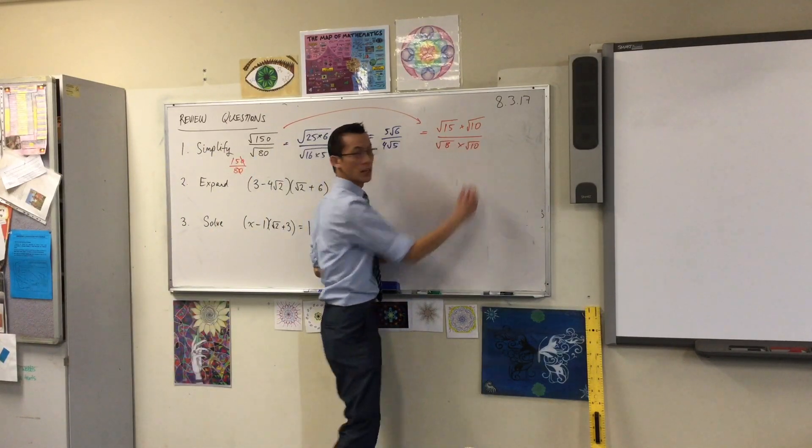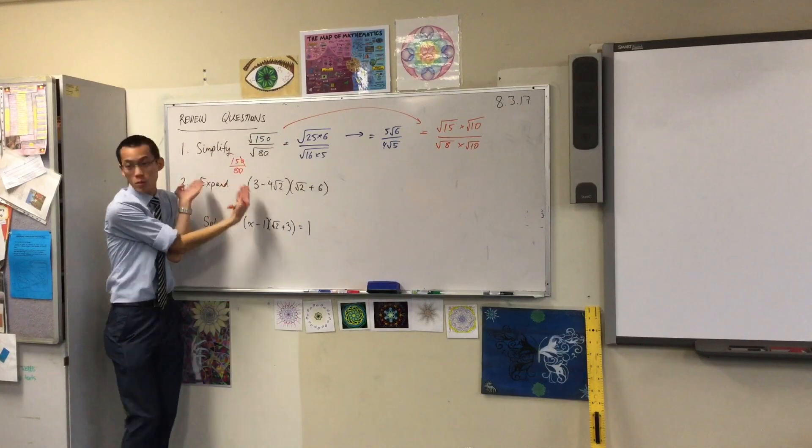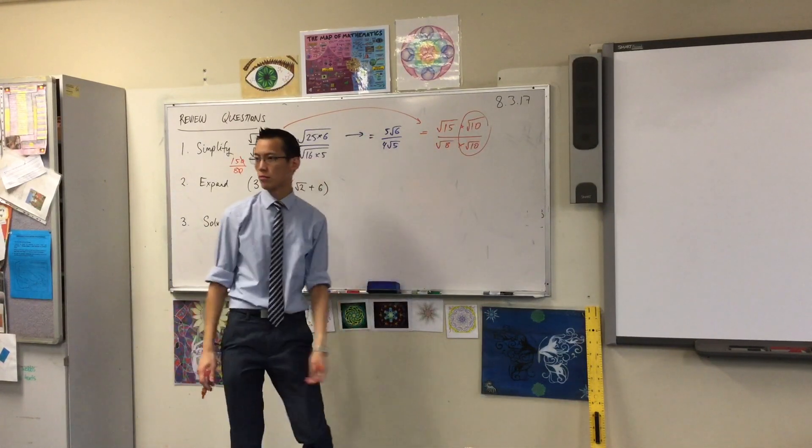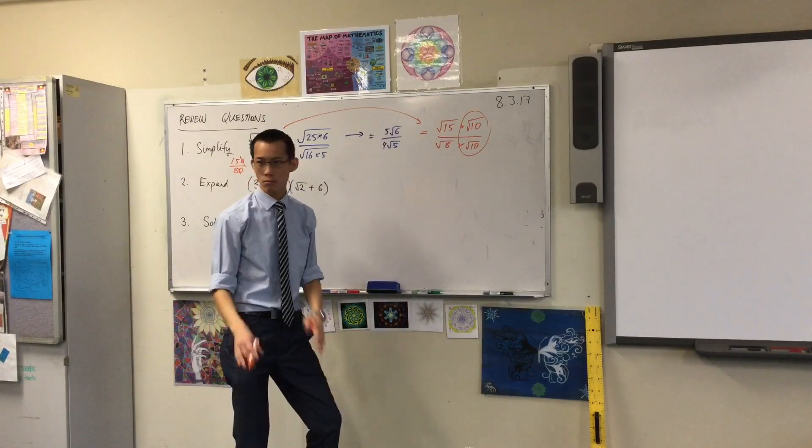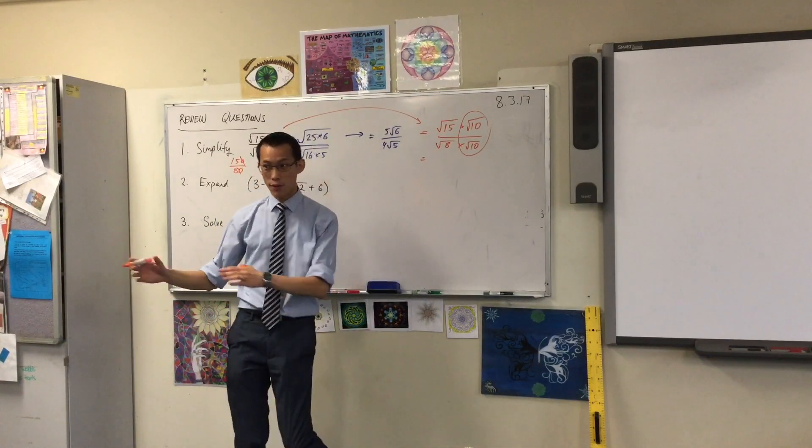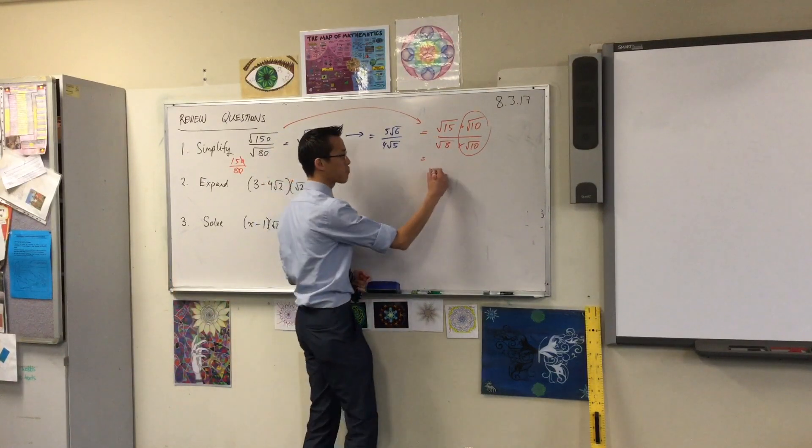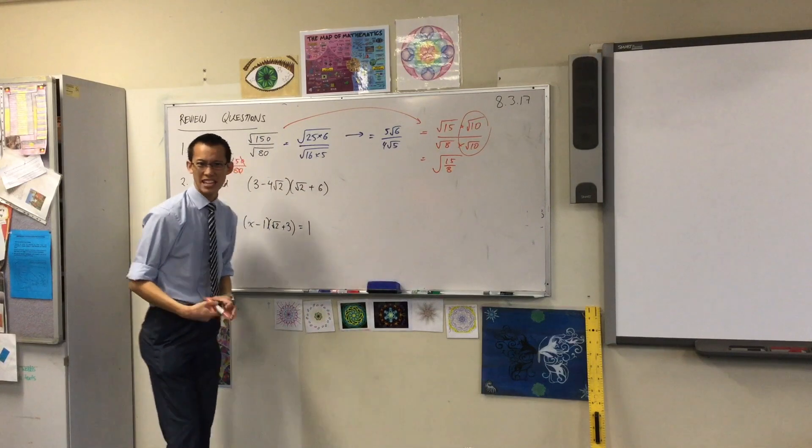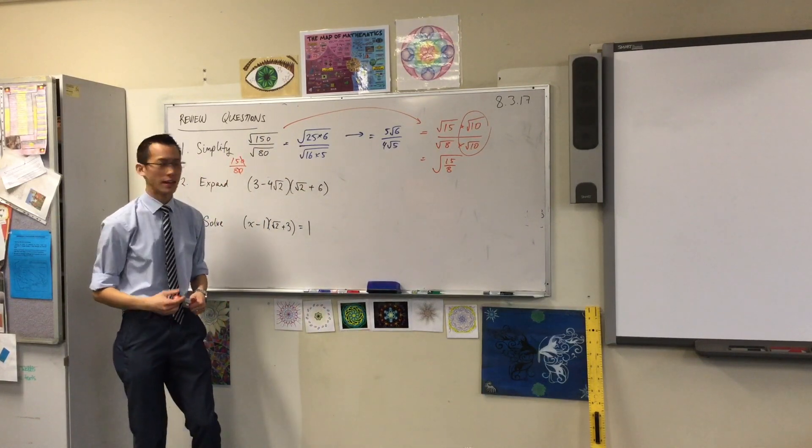Well, look now. Just like with normal numbers without surds, these guys are a common factor on the top and the bottom. So I can just get rid of them. That leaves me with root 15 over root 8. I guess I'd probably write that as root 15 on 8. I think that's simpler. It's just a single surd.